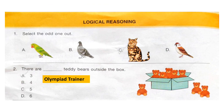Question 1: Select the odd one out. Look at the options and find out the odd one. The correct answer is option C. The other three options are birds, whereas option C is an animal.